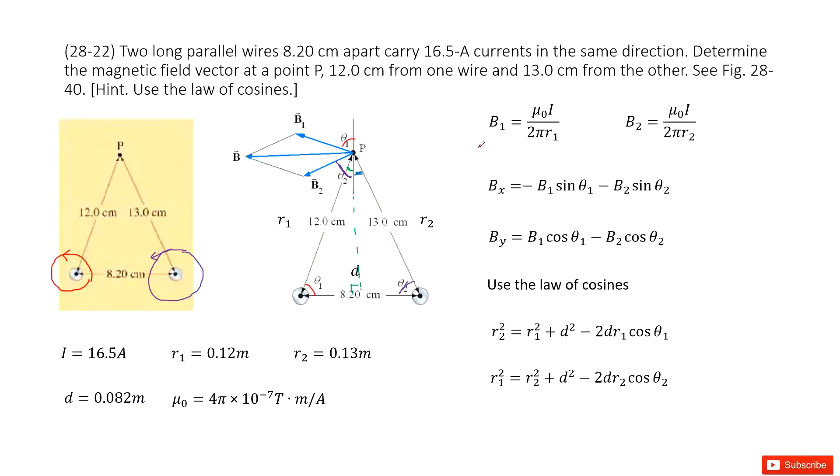Now you can see, if we know the magnetic field from B1 and B2, right? How can we get the net magnetic field at P? We just need to project B1 and B2 into x component and y component. Add them together, we get it. Right?